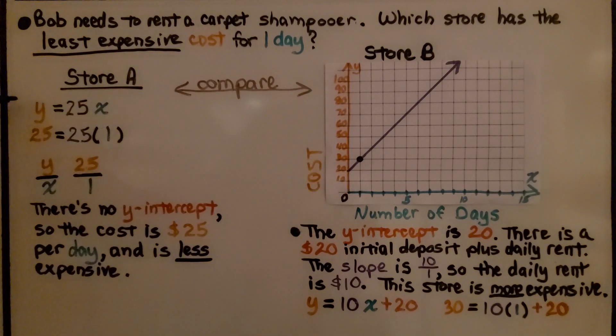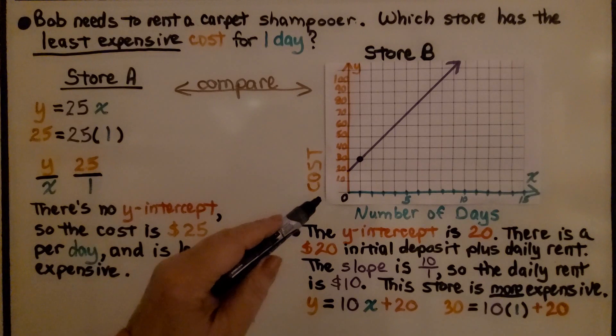We have for store A, y = 25x. If we substitute 1 for x, we know y = 25. The unit rate is 25 to 1. There's no y-intercept, so the cost is $25 per day, and this is going to be less expensive.